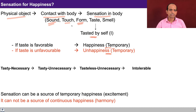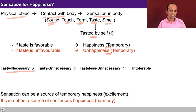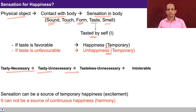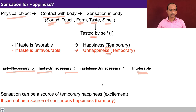Similarly with touch — one may go for very soft things or some favorable touch for the body and try to feel happy through that, but very soon you lose that taste and are not able to ensure happiness in continuity. Whatever you derive through touch is going to be temporary. Whatever you derive from sensation of form — some look, shape, or size — is again going to be temporary, and similarly with taste and smell. Sensation can be a source of temporary happiness, that is excitement, but it cannot be a source of continuous happiness.